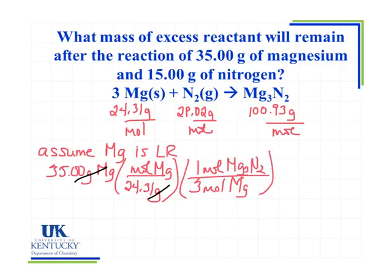Those numbers come from the coefficients in my balanced chemical equation. I'm going to leave the result in moles of magnesium nitride because the problem doesn't ask for grams of magnesium nitride — it's asking for something else. So calculating: 35 ÷ 24.31 ÷ 3 gives me 0.480 moles of magnesium nitride.